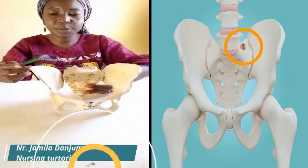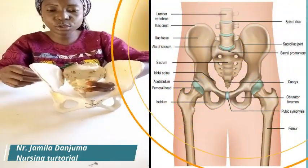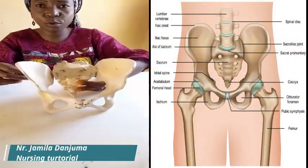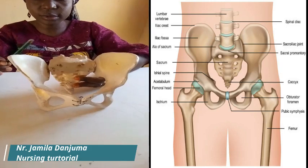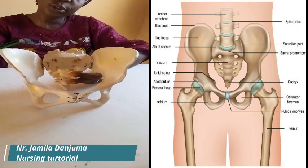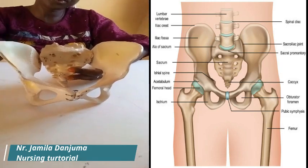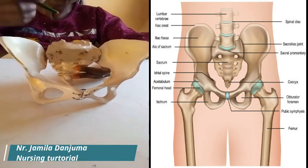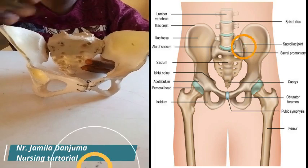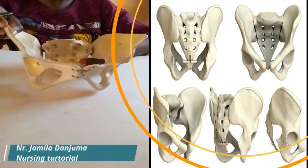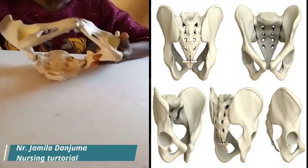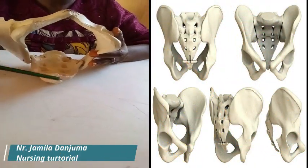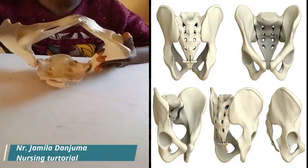The pelvis is a basin-like structure that is made up of three bones: two innominate bones, one sacrum, and one coccyx.